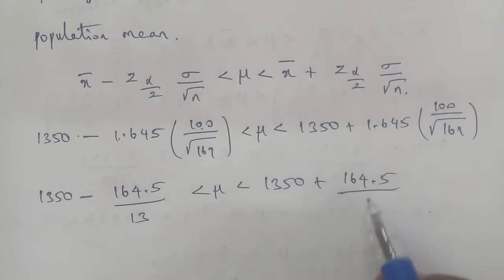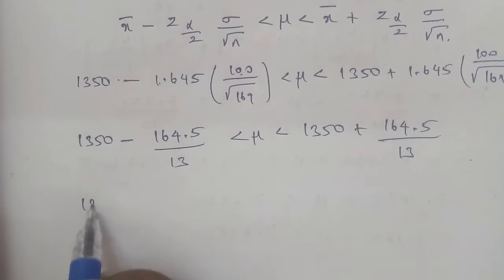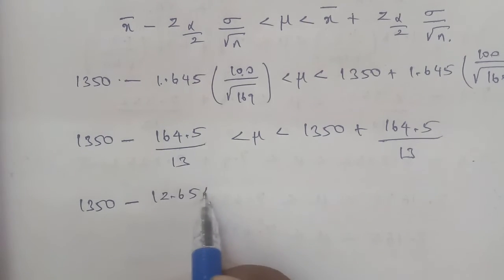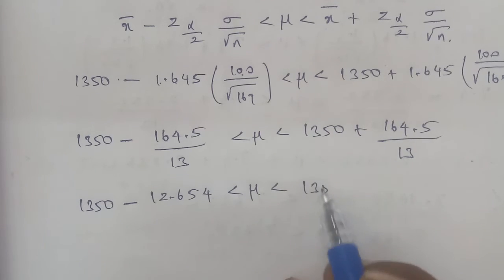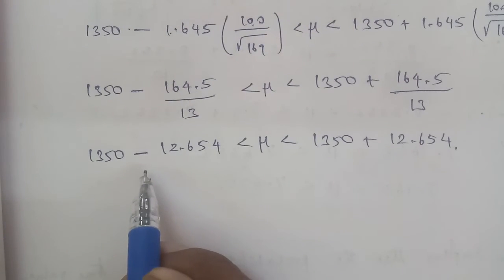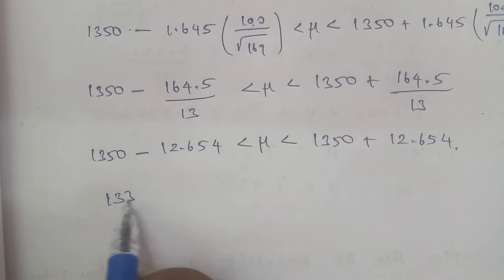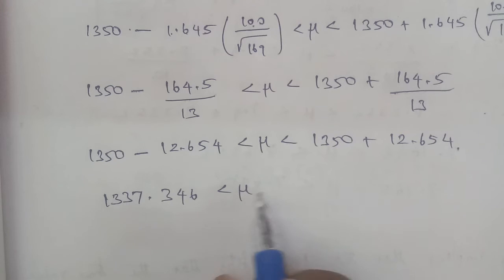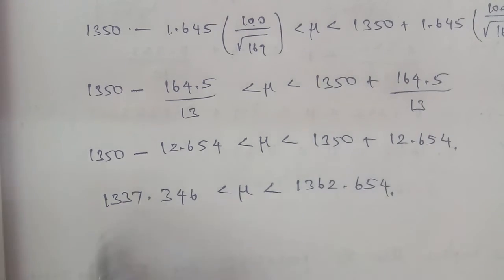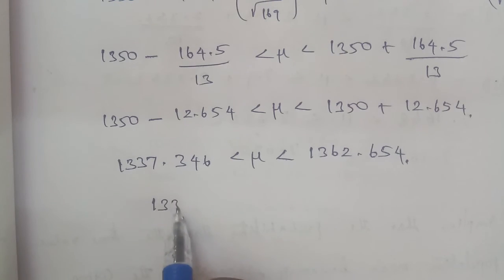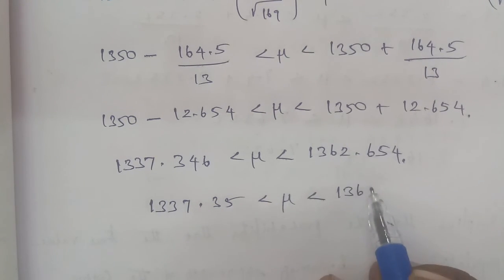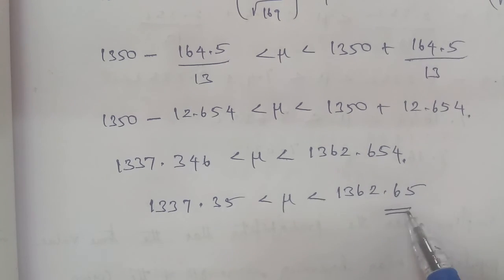The calculation: 1.645 × 100 equals 164.5. So 164.5 divided by √169, which is 13, gives us 12.654. Therefore, 1350 minus 12.654 < μ < 1350 plus 12.654. Subtracting gives us 1337.346 < μ, and adding gives us 1362.654. So the final answer is 1337.35 < μ < 1362.65.